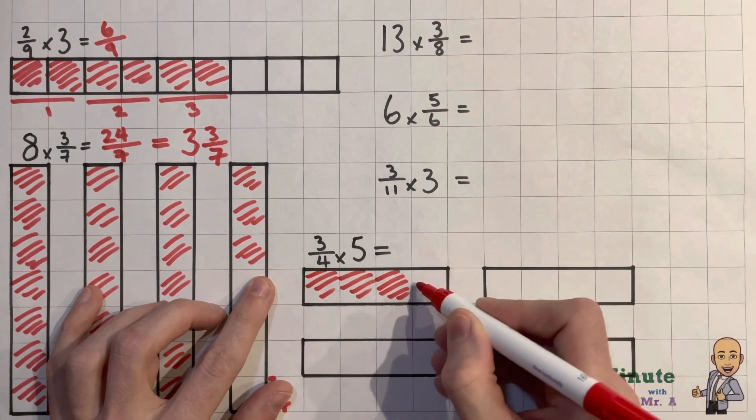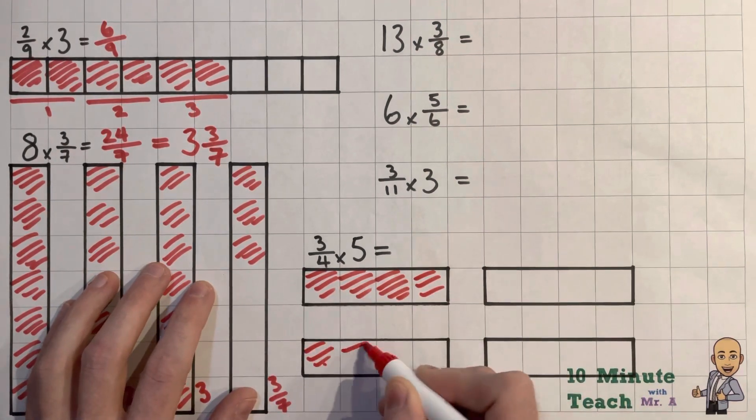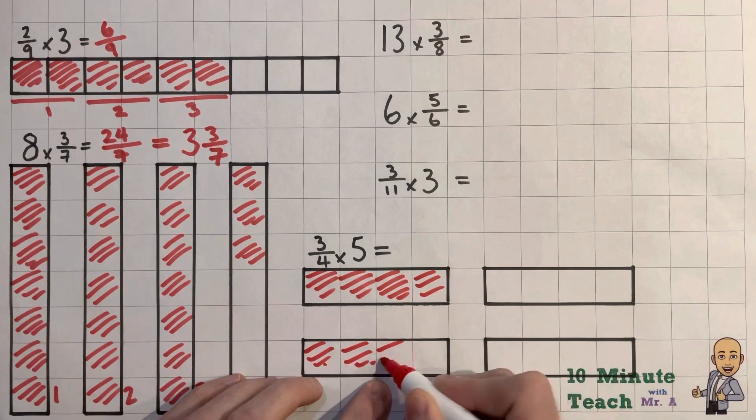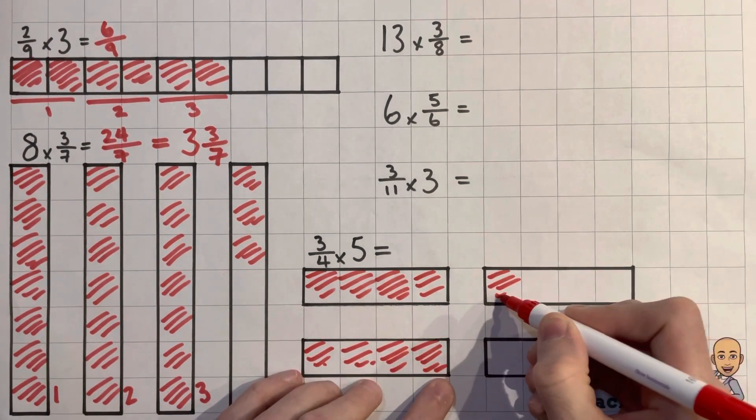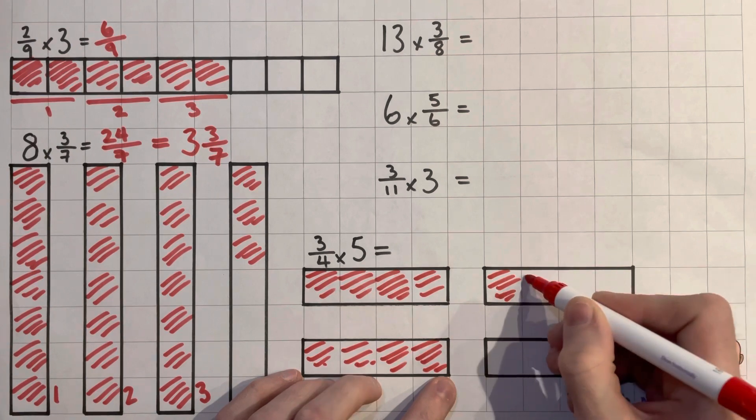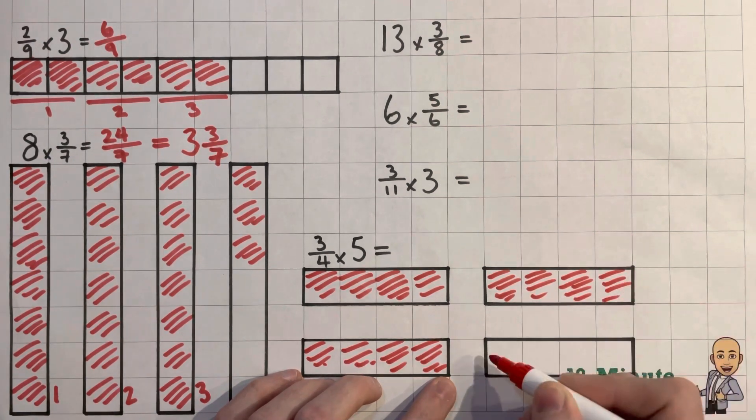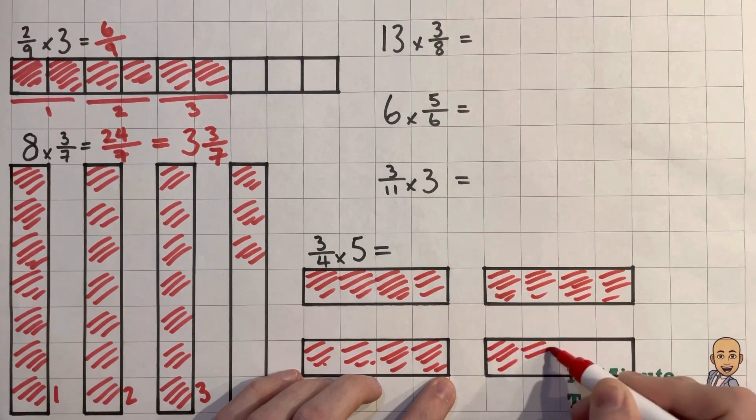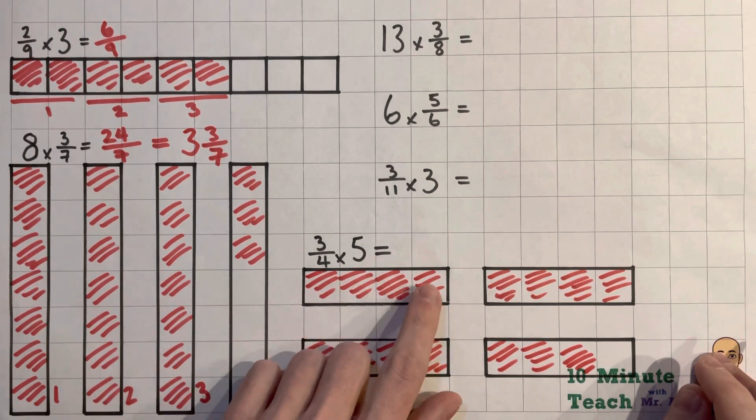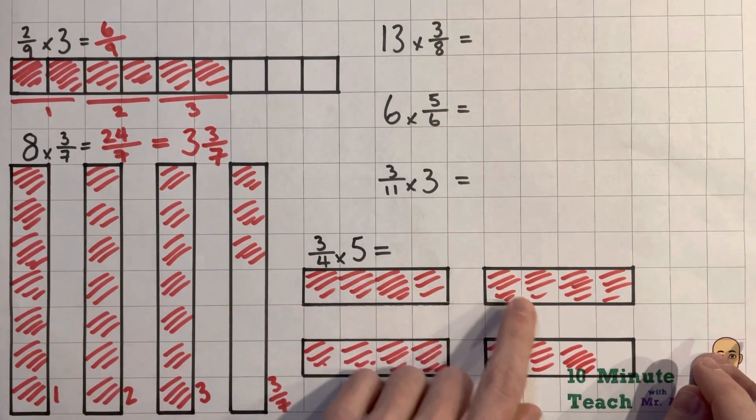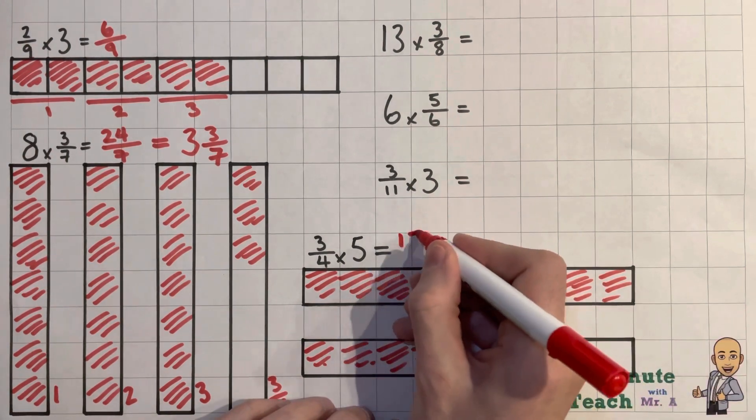So there's it multiplied by 1. There's 2. There's 3. And 4. And 5. So 3, 6, 9, 12, 15. So that's 15 quarters.